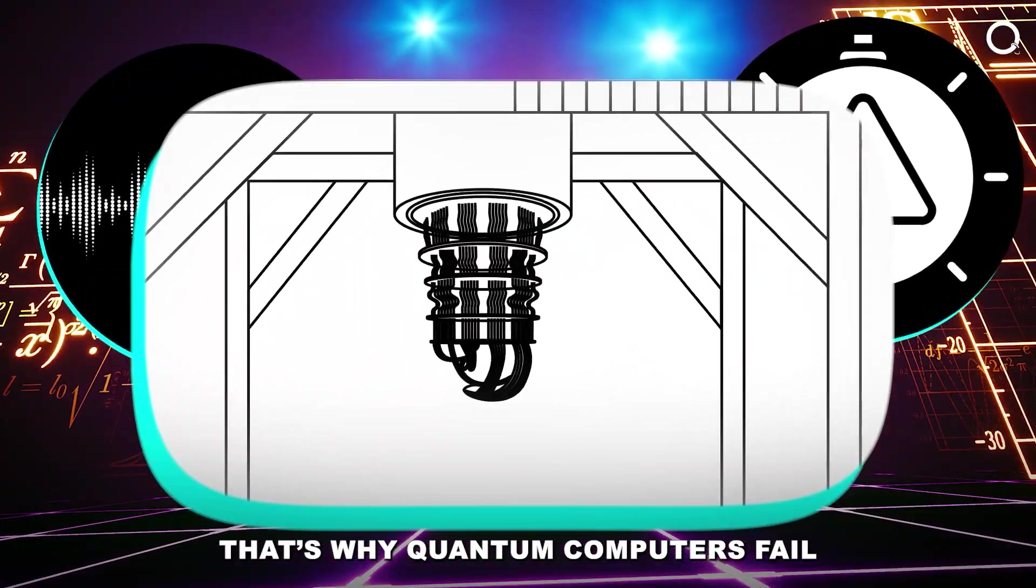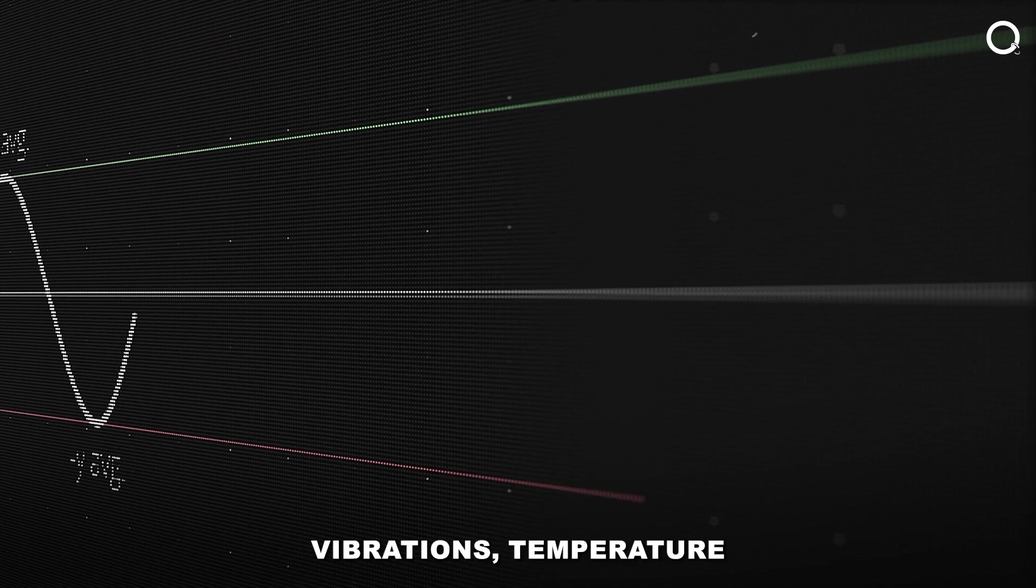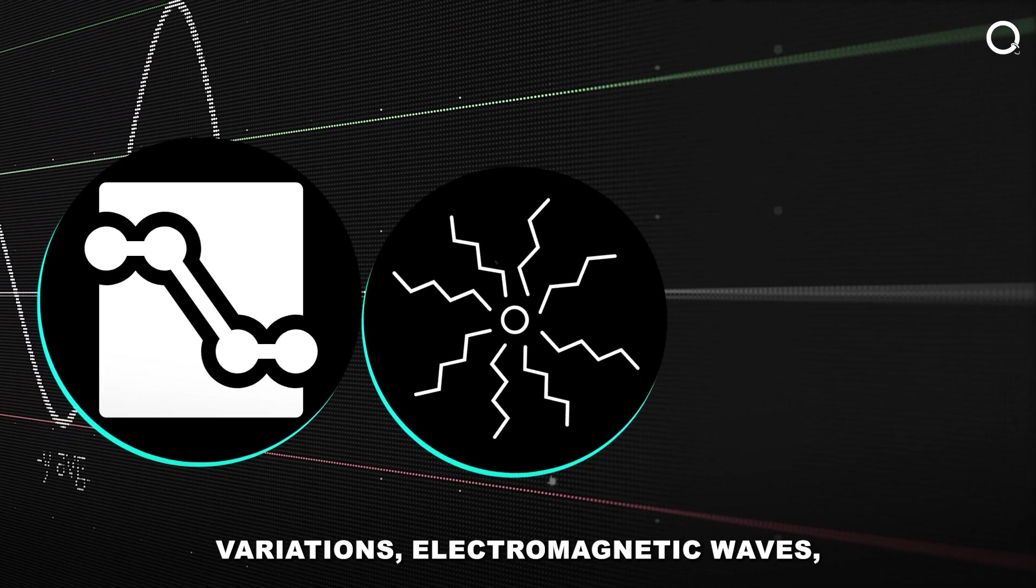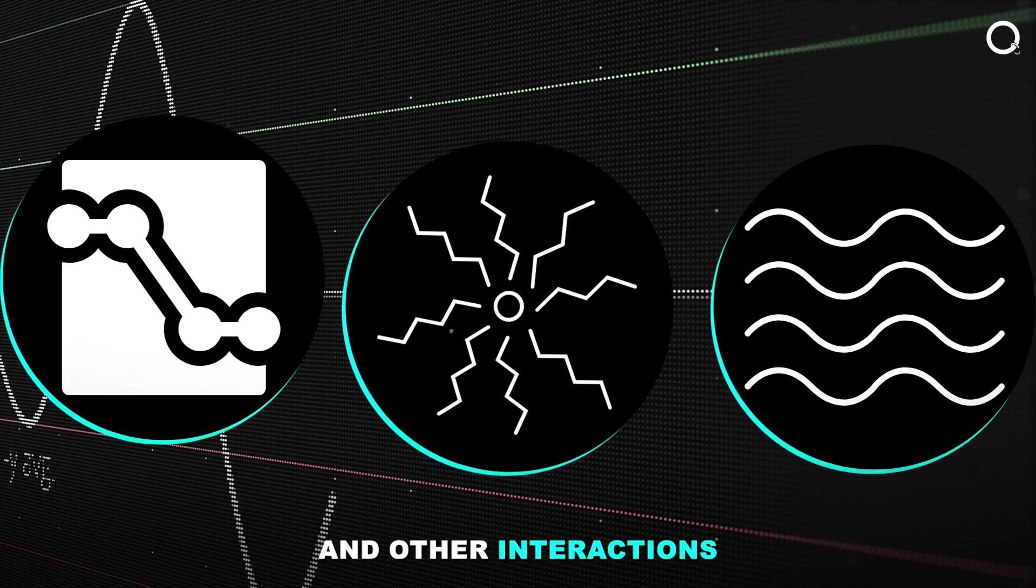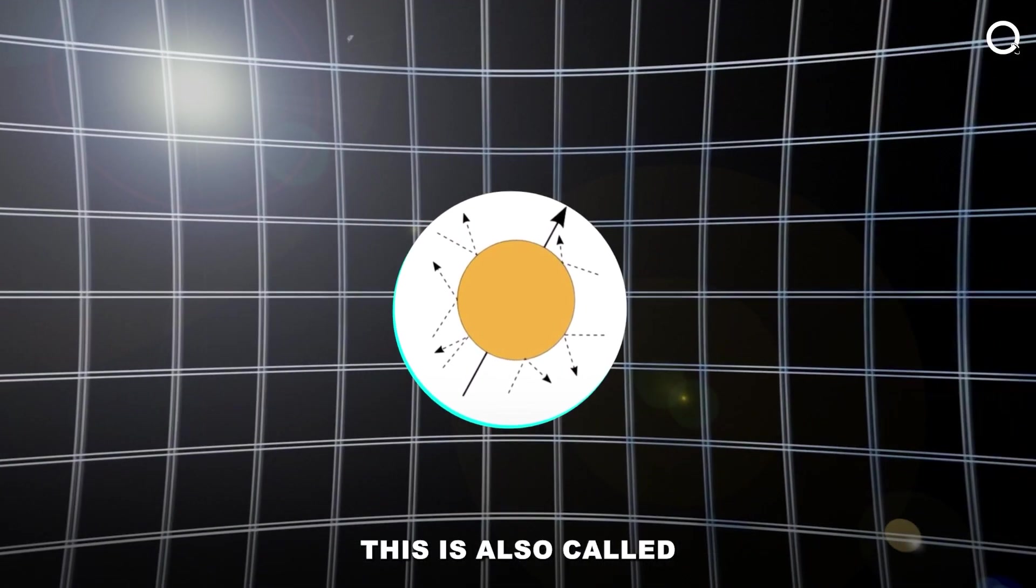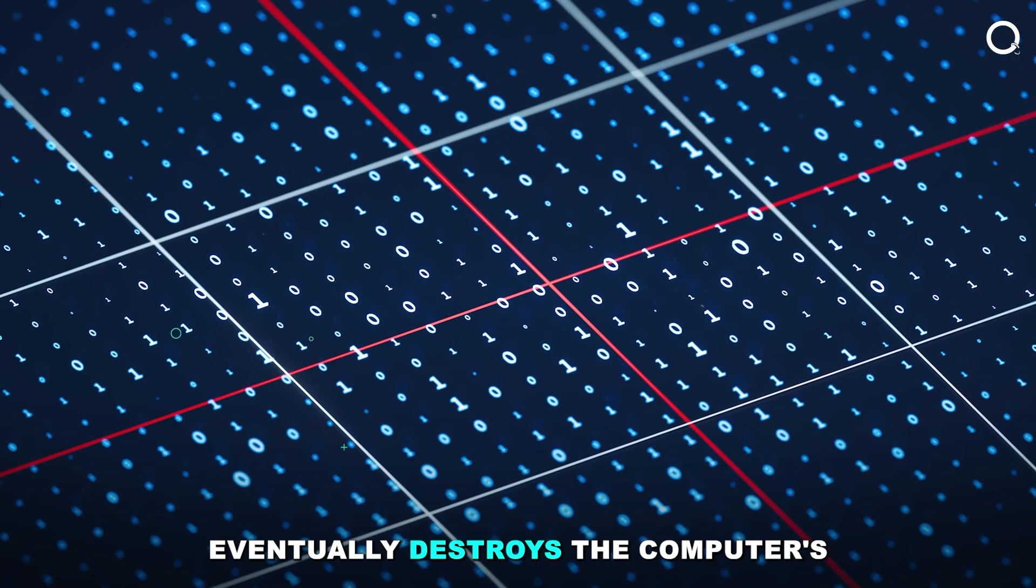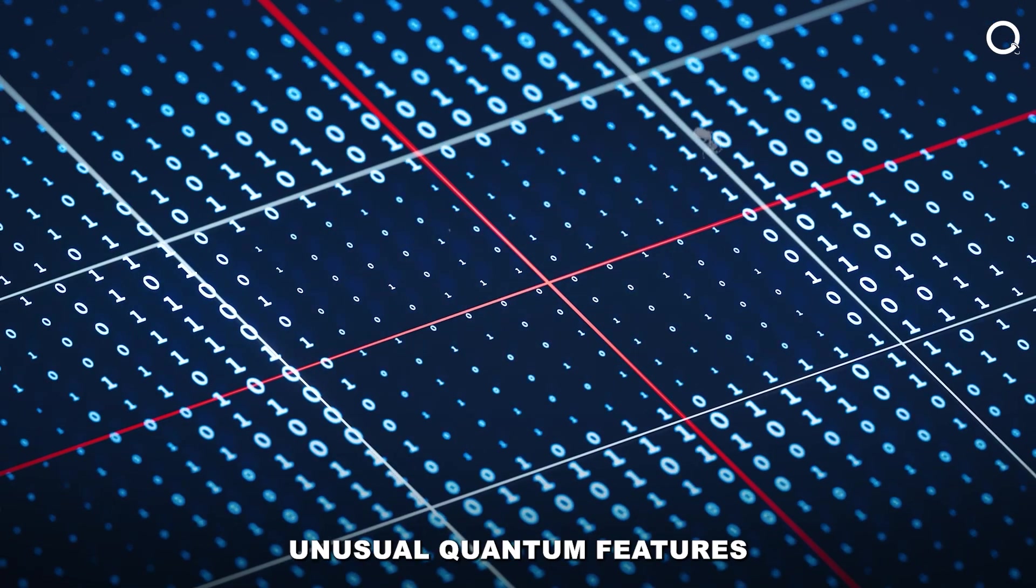That's why quantum computers fail before any non-trivial program can run through to completion. Vibrations, temperature variations, electromagnetic waves, and other interactions with the outside world all contribute to the loss of coherence. This is also called decoherence. The decoherence eventually destroys the computer's unusual quantum features.